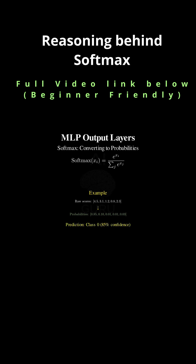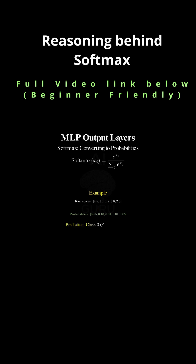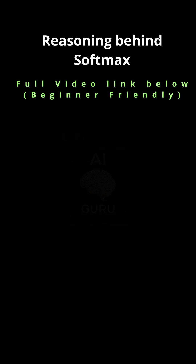So instead of seeing that neuron 7 has a raw score of 4.5 and neuron 3 has a score of 3.1, Softmax tells you: I am 85% sure this is class 7, 10% sure it's class 3, and 5% sure it's everything else combined. You get the network's confidence level. Precisely — the input is then classified as whichever class has the highest probability. It's a very intuitive and mathematically consistent output.